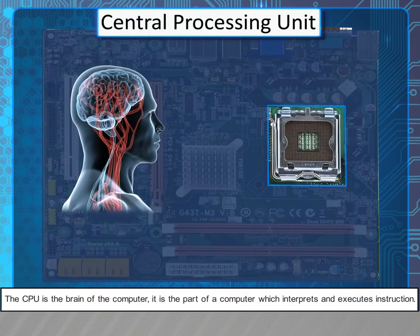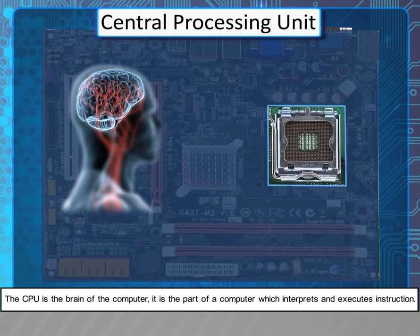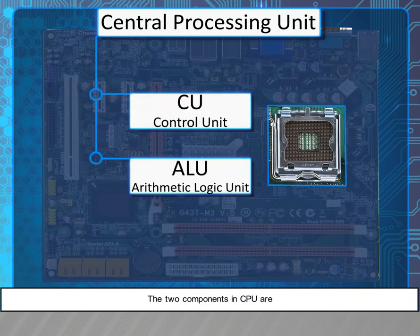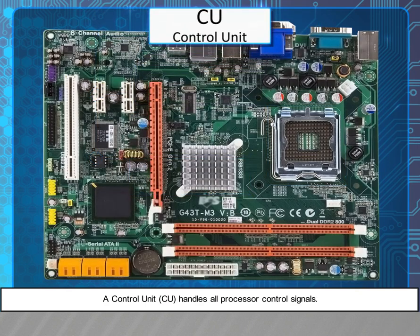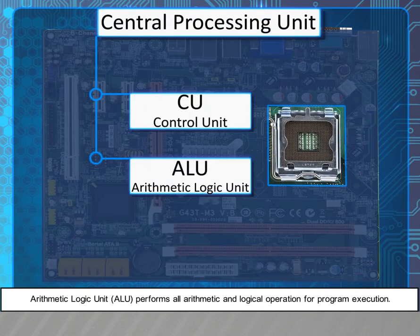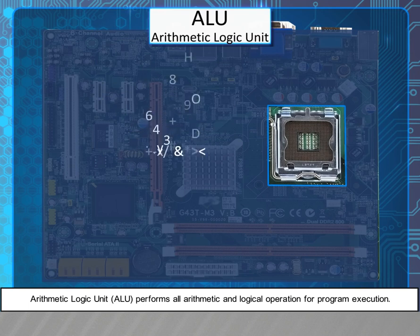Central Processing Unit. The CPU is the brain of the computer. It is a part of a computer which interprets and executes instructions. The two components in CPU are the Control Unit and the Arithmetic and Logic Unit (ALU). The Control Unit handles all processor control signals, while the ALU performs all arithmetic and logical operations for program execution.